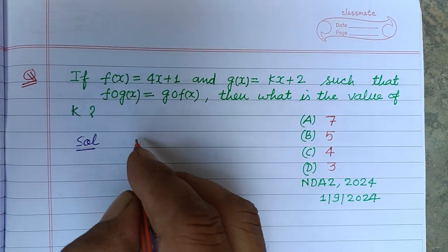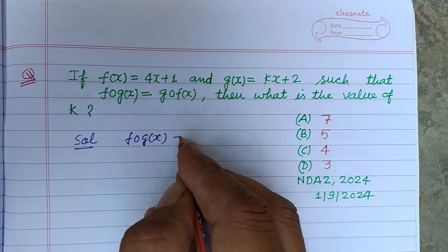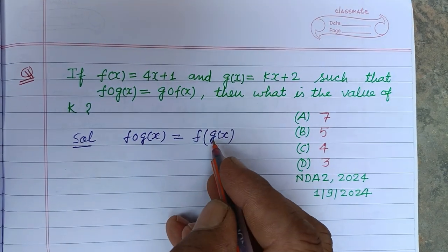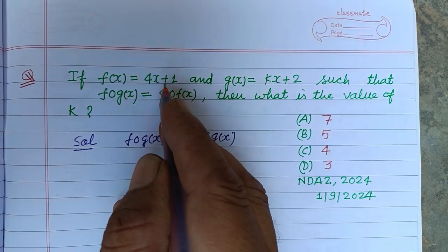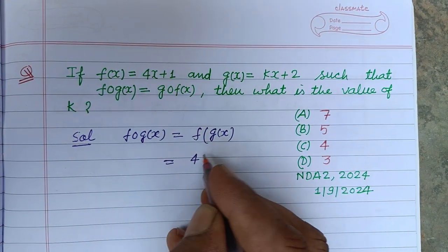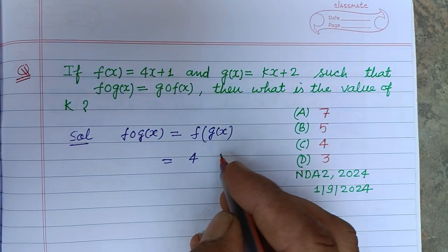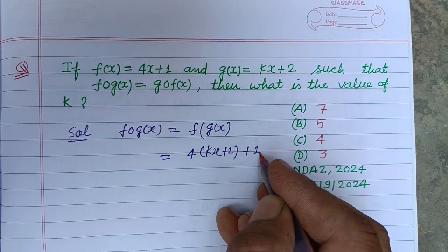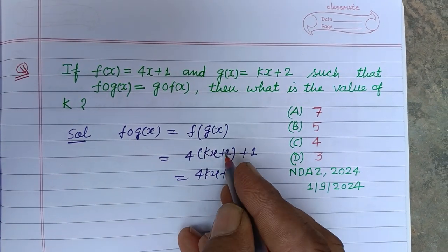So students, f∘g(x) means f of g(x). We put g(x) in place of x in f(x). Since f(x) is 4x plus 1, we put kx plus 2 in place of x. This gives us 4(kx plus 2) plus 1, which equals 4kx plus 8 plus 1, that is 4kx plus 9.